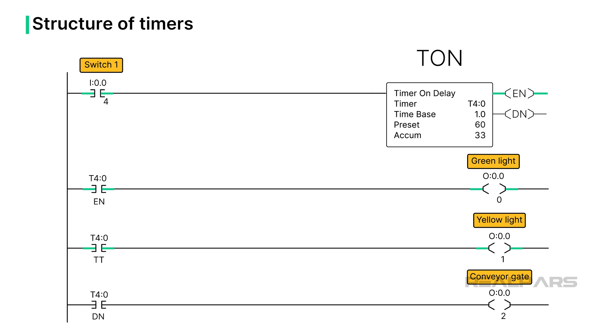For example, we may want to switch a conveyor gate once boxes have been traveling down one conveyor for one minute. The timer preset may be 60 with a time base of one second. So after one minute, when the done bit is set, the conveyor gate switches to the opposite side.